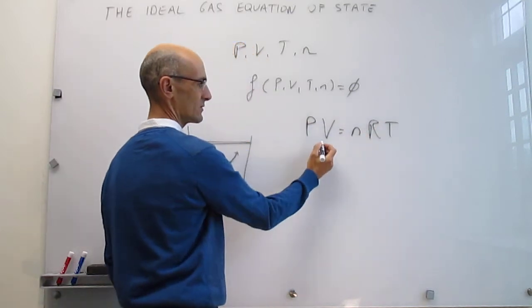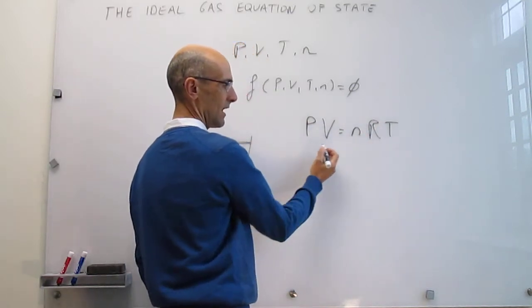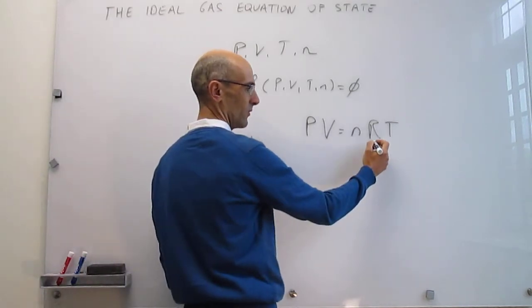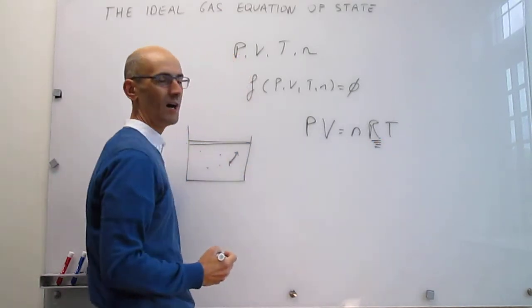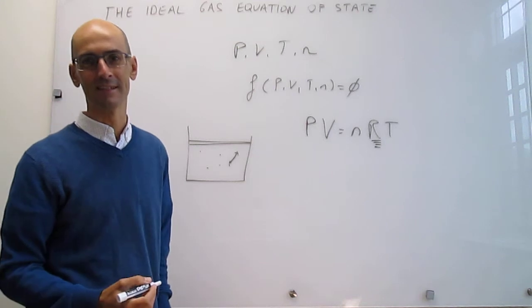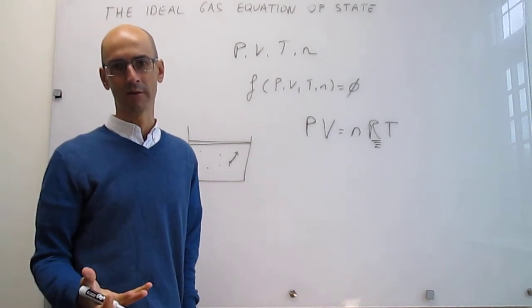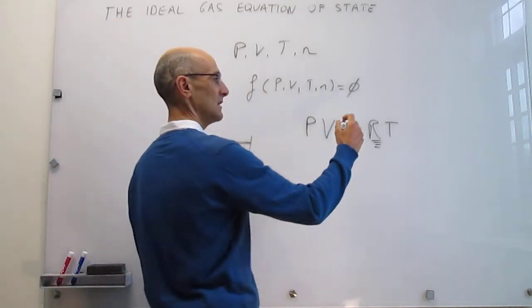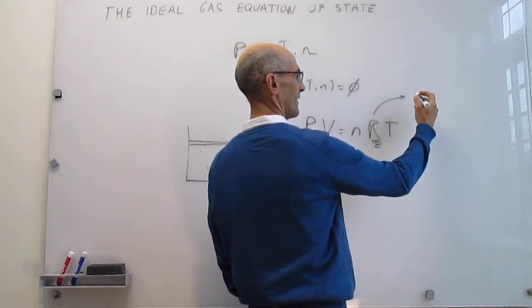Those four variables—pressure, volume, amount, and temperature—are related in this fashion. And there's just one more element to this equation, which is this R, that is the gas constant. It's just a proportionality constant between the product of pressure and volume, and amount and temperature.